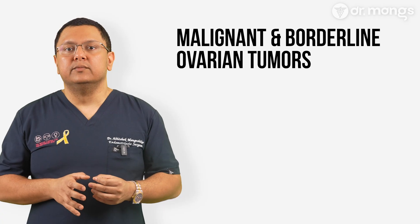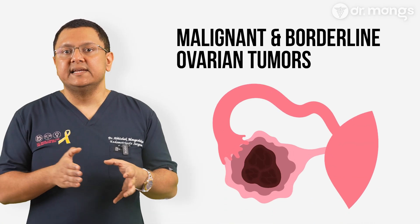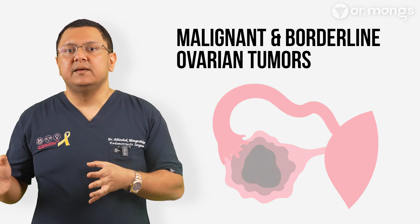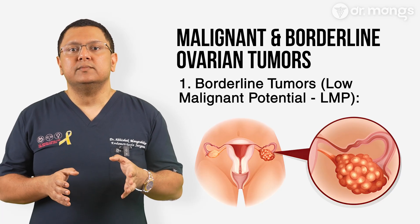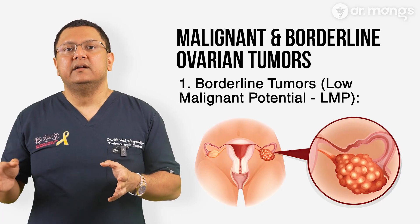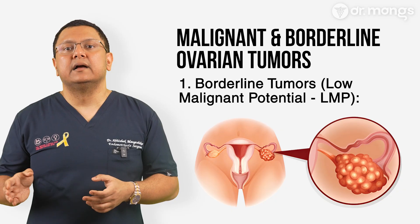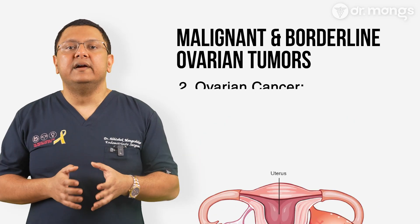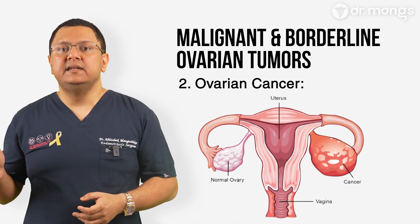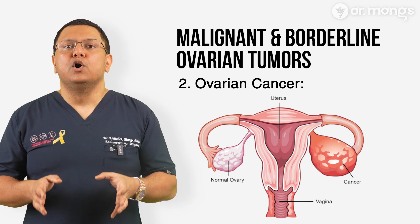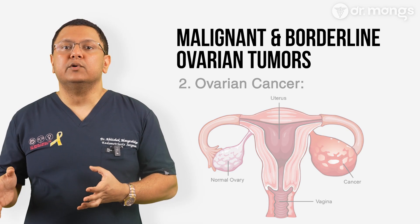Malignant and borderline ovarian tumors: not all ovarian cysts are benign. In some cases, a cyst may be a borderline tumor or low malignant potential. These tumors are not clearly benign or fully malignant but have the potential to become cancerous if left untreated. Malignant ovarian tumors require immediate medical attention and intervention, often including surgery and further treatments like chemotherapy.